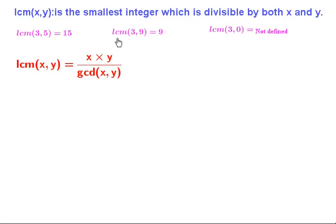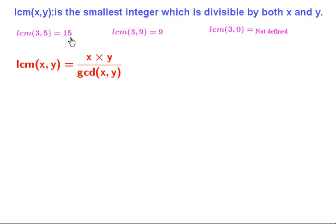In this tutorial we will discuss how to calculate the least common multiple of two numbers efficiently. The LCM of two numbers x and y is the smallest integer which is divisible by both x and y. For example, LCM of 3 and 5 is 15, because 15 is the smallest integer divisible by both 3 and 5.